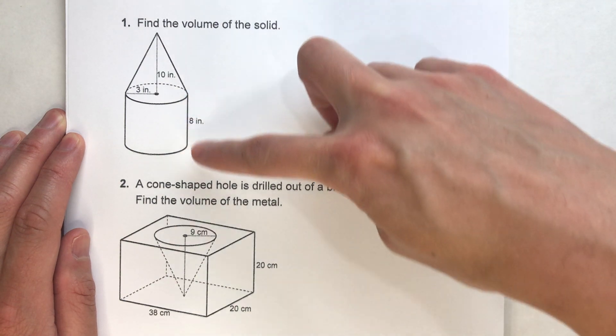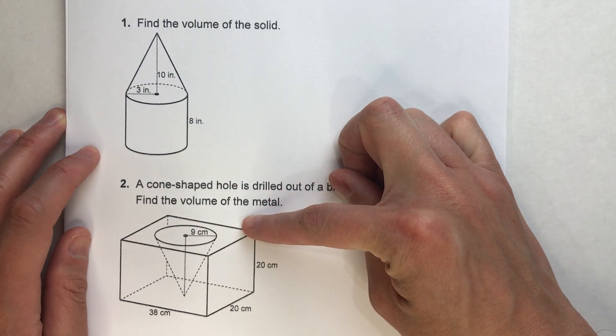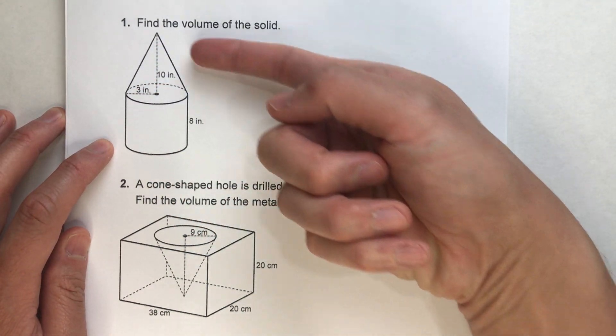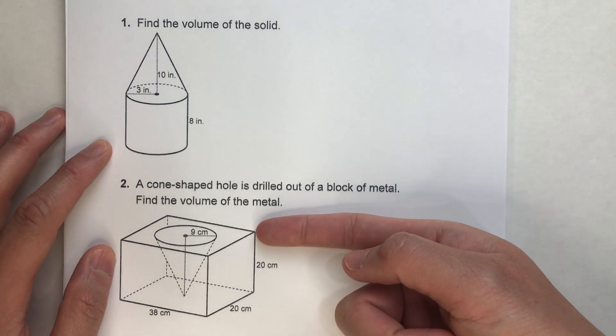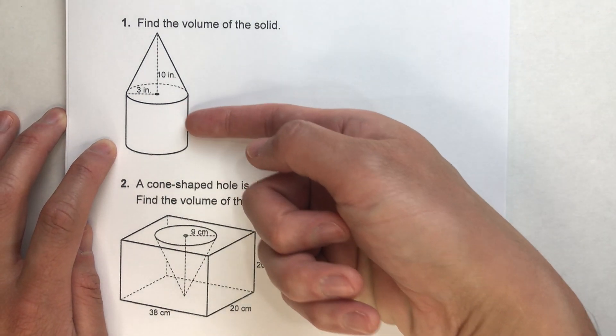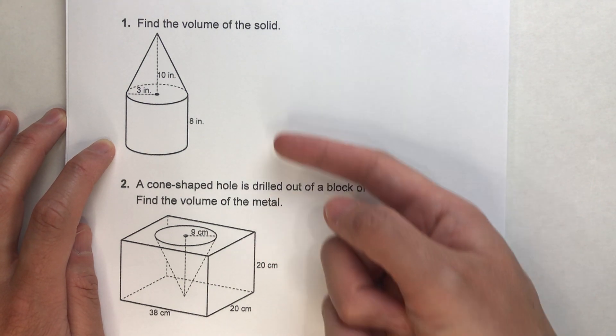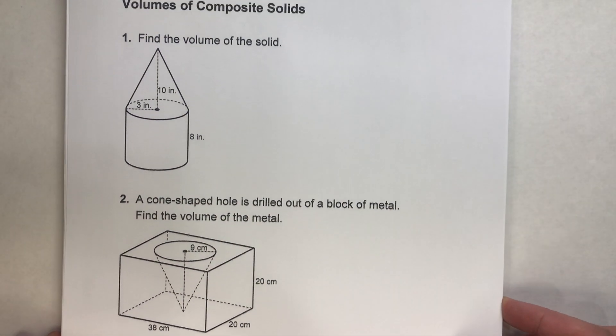For example, this figure here and this figure here. Notice we don't have a formula for a figure that looks like this. There's not even a name for a figure like this or this. But these solids are made up of basic solids that we can combine together to find the total volume. And that's what we're going to be doing here today.